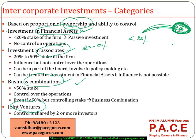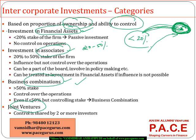If two or more companies come together for joint influential control over a firm, we call it a joint venture. So one way to classify investments in other firms is based on the proportion of ownership. But more than proportion, what really influences the classification is the level of control you exhibit over the operations and management of that company. Generally, if you have less than 20 percent stake, your level of control is much lesser, and we classify those as investment in financial assets.